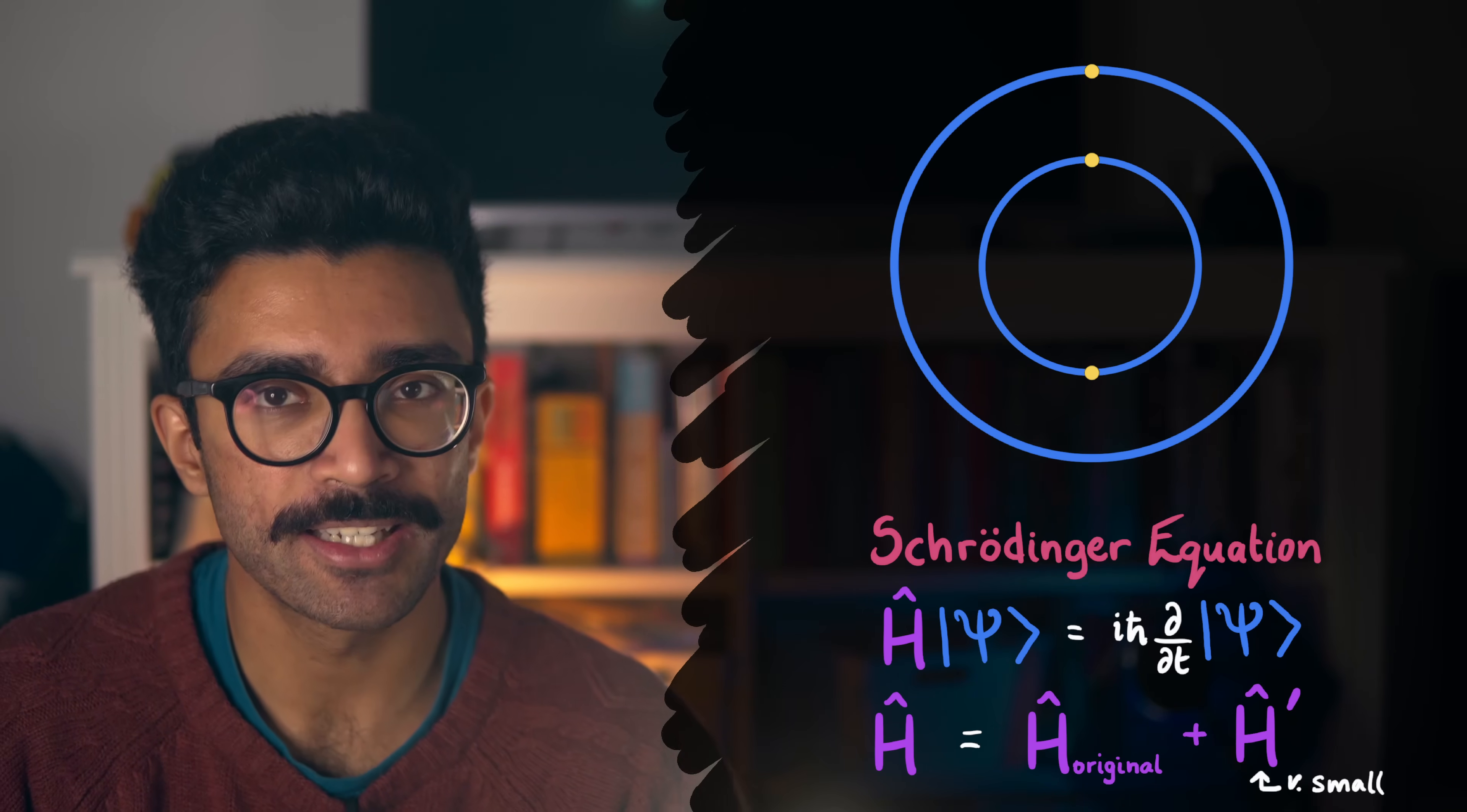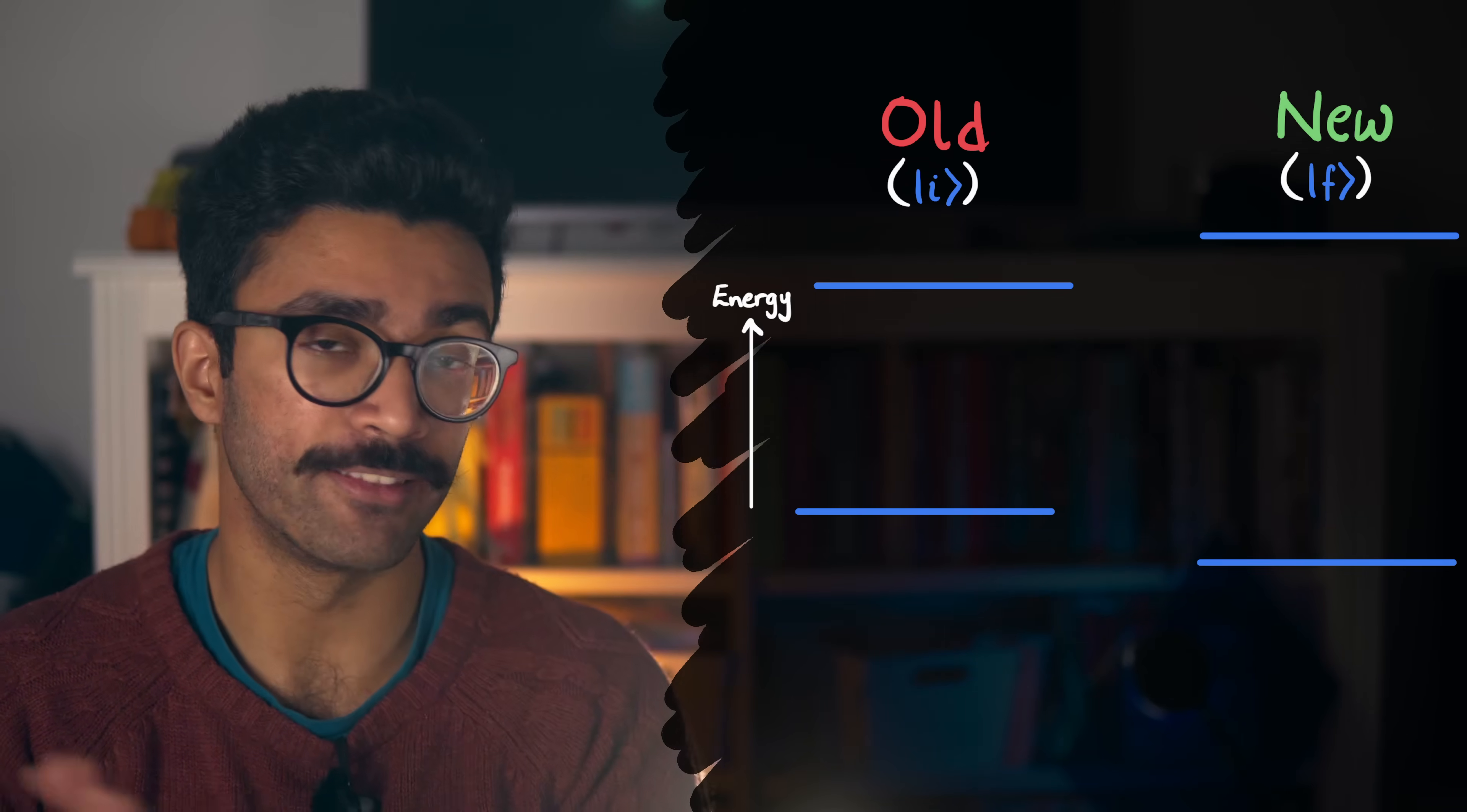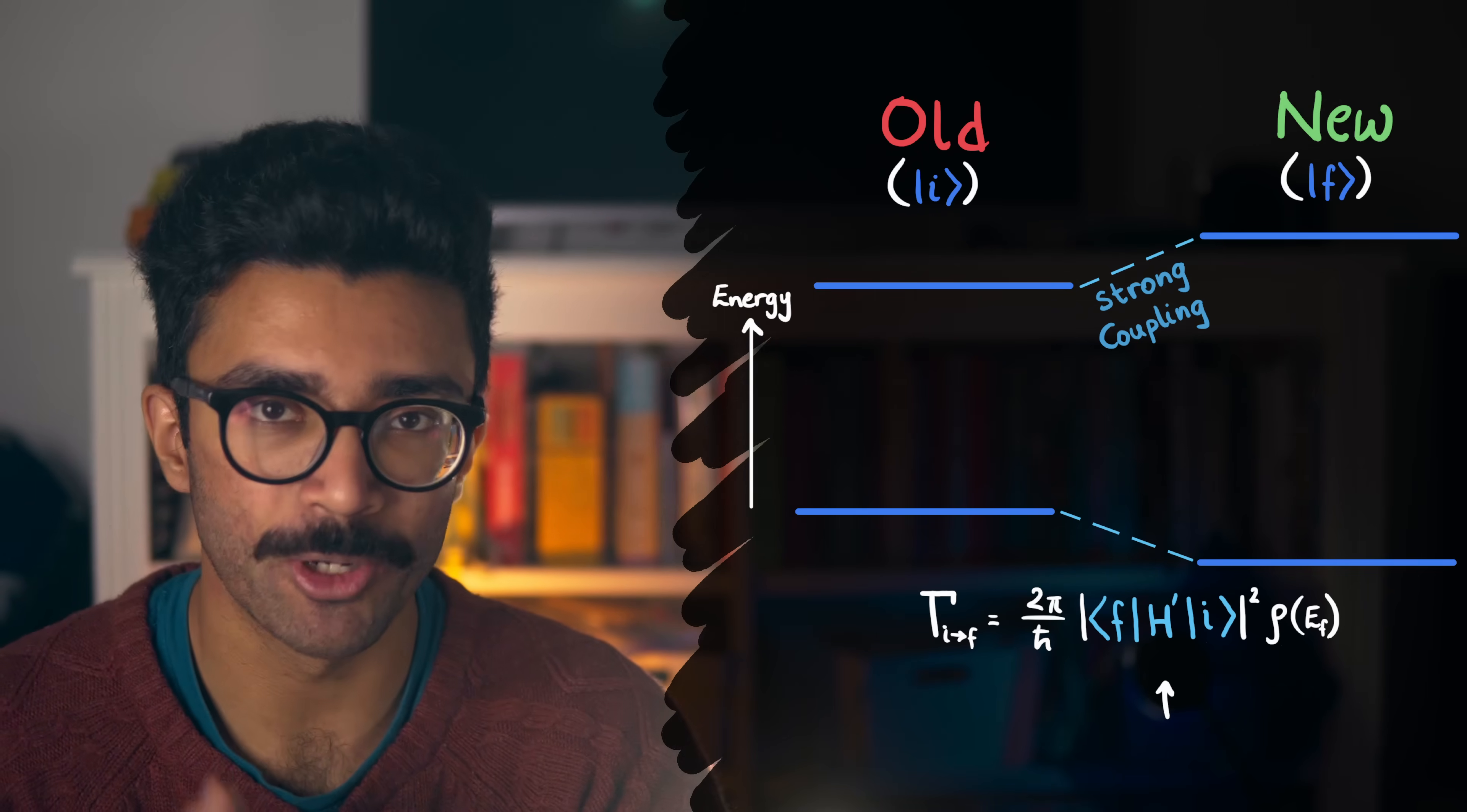For simplicity, let's just consider a couple of energy levels, both old ones and new ones. We'll draw them as straight lines, just to make visualizing them a bit easier. Now, it turns out that in quantum mechanics, our electron in this energy level is more likely to transition into an energy level closer in energy, or one that has a stronger coupling with the old energy level that it was in. This coupling is mathematically described by this term in the golden rule formula.